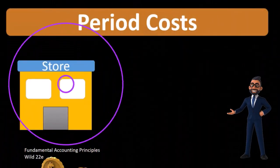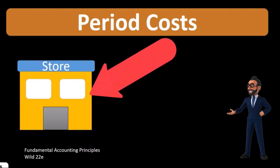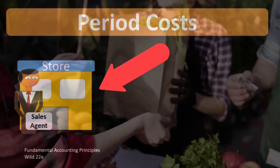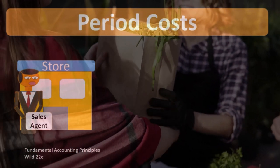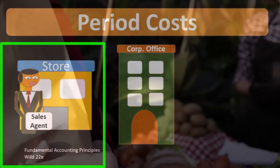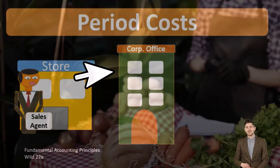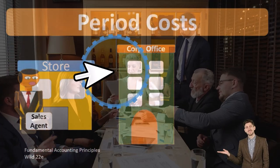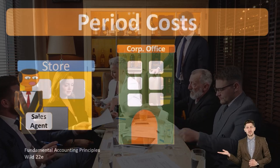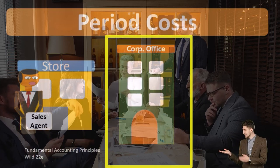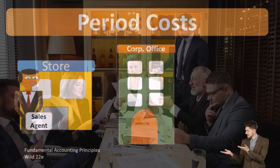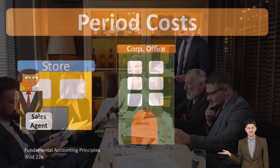Those sections include things like the selling within the store — if we had a sales agent within the store, the salary for the sales agent, the rent on the store where we're going to sell the inventory. It could also include things like the corporate office — whether it be the depreciation on the corporate office, basically everything that goes on within the corporate office, rather than the warehouse where we are producing the inventory or the store where we're selling the inventory.